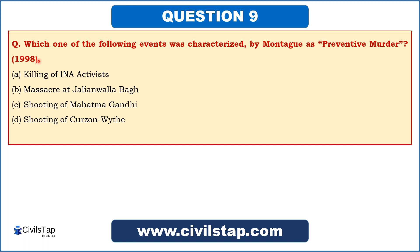This question came in the prelims of 1998: 'Which one of the following events was characterized by Montague as preventive murder?' Options are: killing of INA activists; massacre at Jallianwala Bagh; shooting of Mahatma Gandhi; and shooting of Cousin White. You can solve this in two ways: directly know Montague's 'preventive murder' statement, or recall that Montague was Secretary of State of India during the Act of 1919, and in 1919 the key event was Jallianwala Bagh. So the answer is B — the massacre at Jallianwala Bagh was characterized as preventive murder.